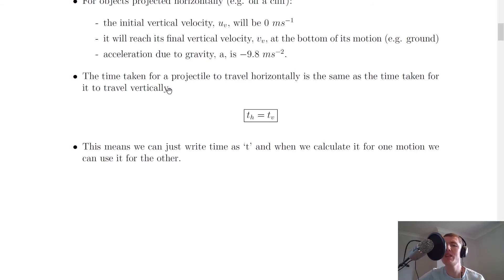The time taken for a projectile to travel horizontally is the same as the time taken for it to travel vertically. So we could write that th = tv. This means that we can just write time as t, and when we calculate it for one motion, we can use it for the other. Let's say we're doing a question for an object projected horizontally, and we've split the motion into horizontal and vertical motion.